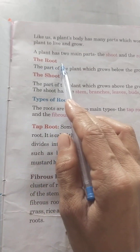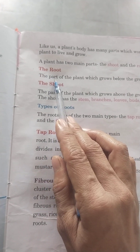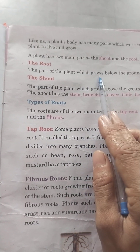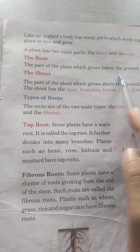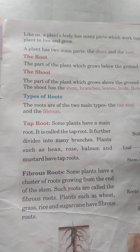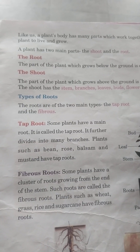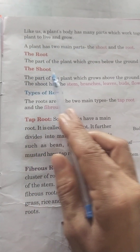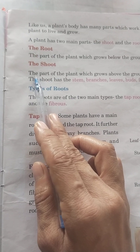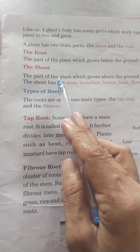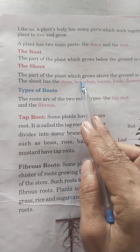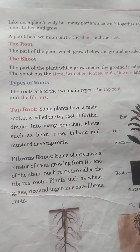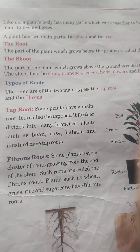The root: the part of the plant which grows below the ground is called the root. The shoot: the part of the plant which grows above the ground is called the shoot.